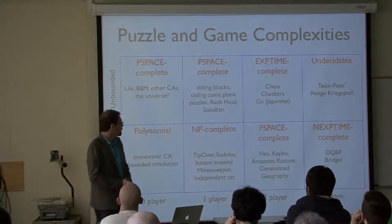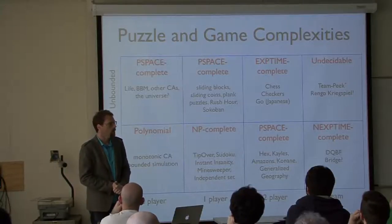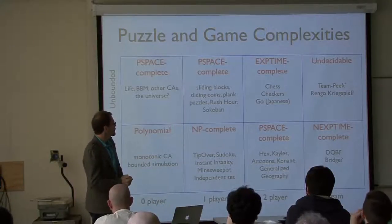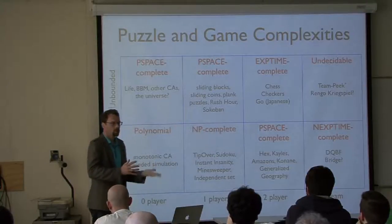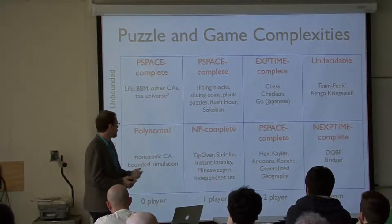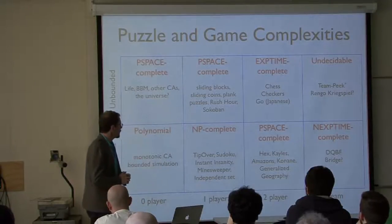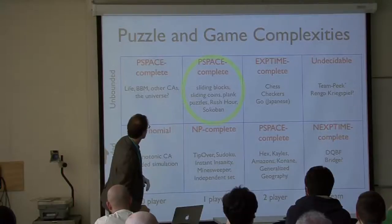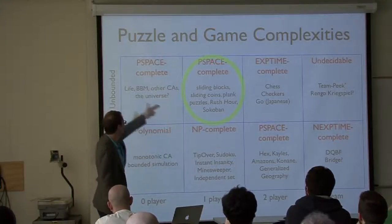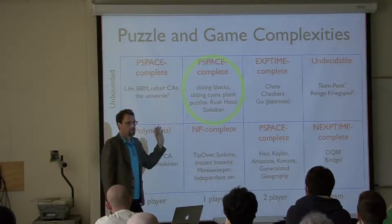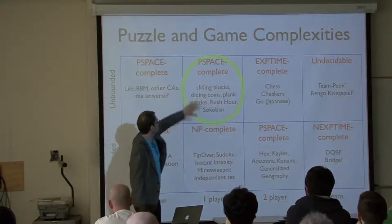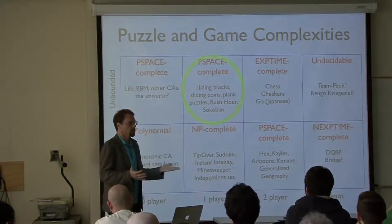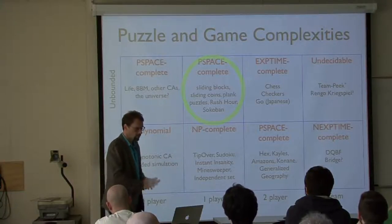What I'm going to describe is a general framework called constraint logic — a family of abstract games all set with the same background physics that can be naturally specialized for each of these eight boxes. We can show that each type of constraint logic is NP-complete, PSPACE-complete, etc., depending on the box. The one-player unbounded case is called non-deterministic constraint logic, and we can use it to build reductions showing hardness results for lots of games and puzzles much more straightforwardly than going directly from quantified Boolean formulas or Turing machines.